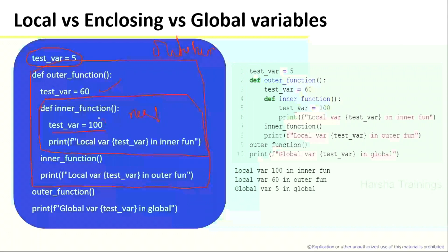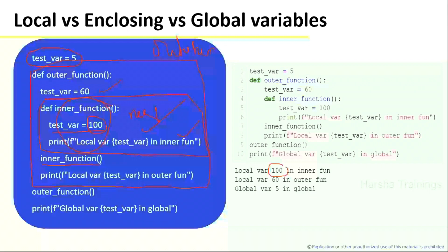Local variables have the highest precedence. So within the inner function, printing test_variable will print 100. Within the outer function's scope, test_variable takes the local value, so it prints 60. Finally, outside both functions, the global variable is accessible — it prints 5. Global variables can be accessed within functions, in nested functions, and outside functions.